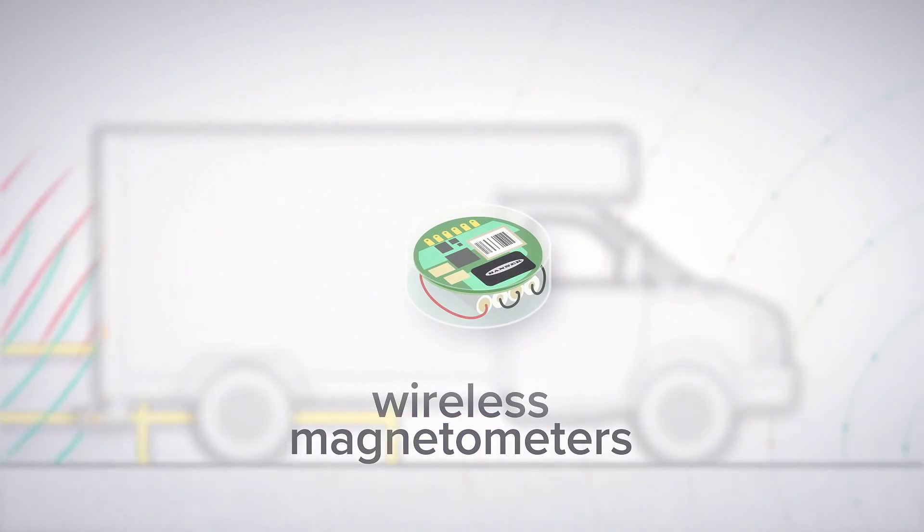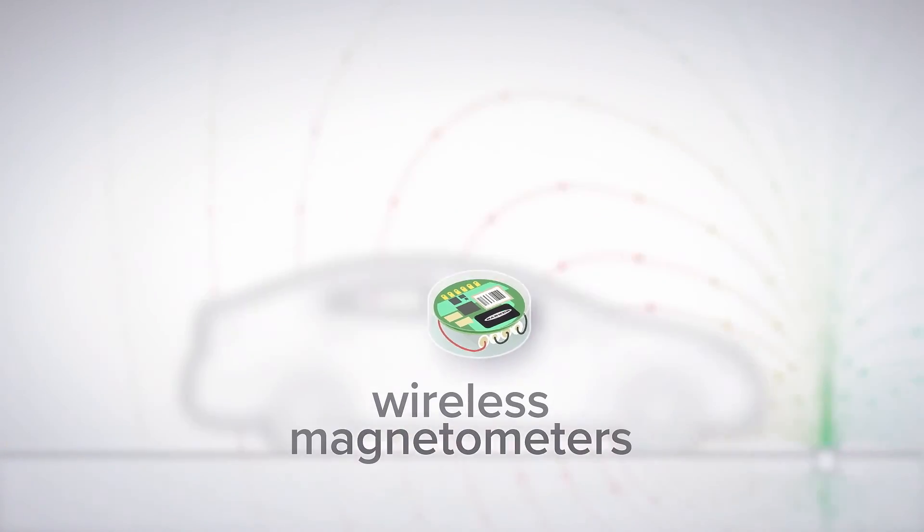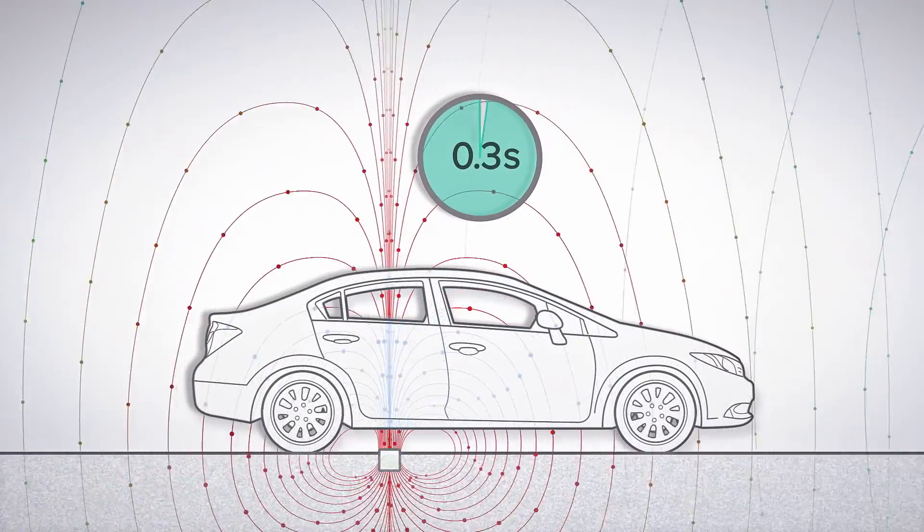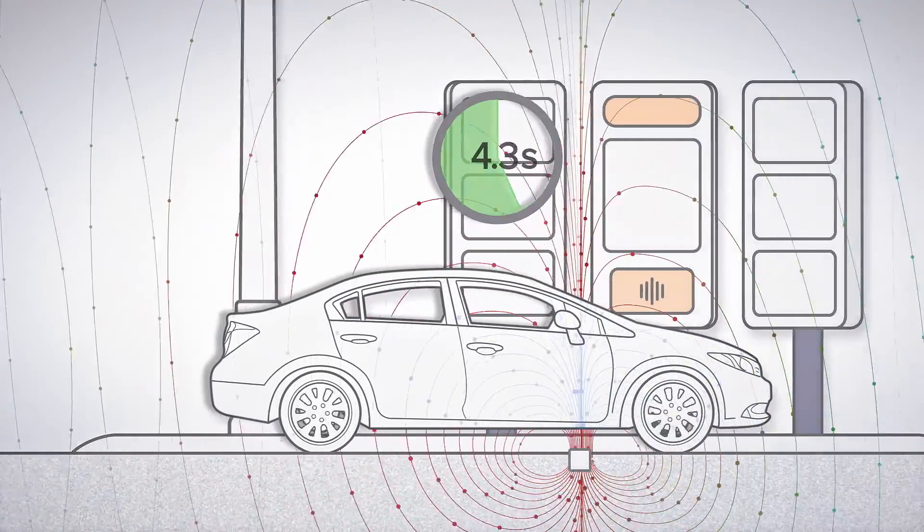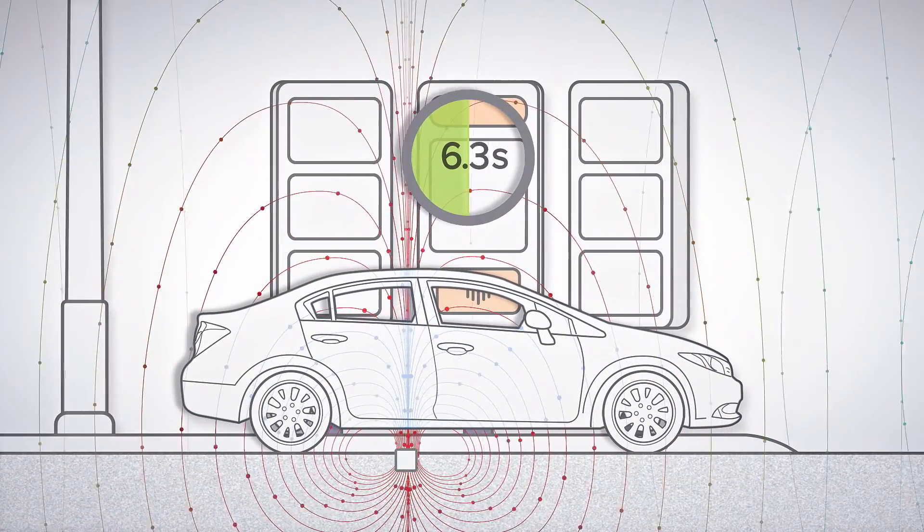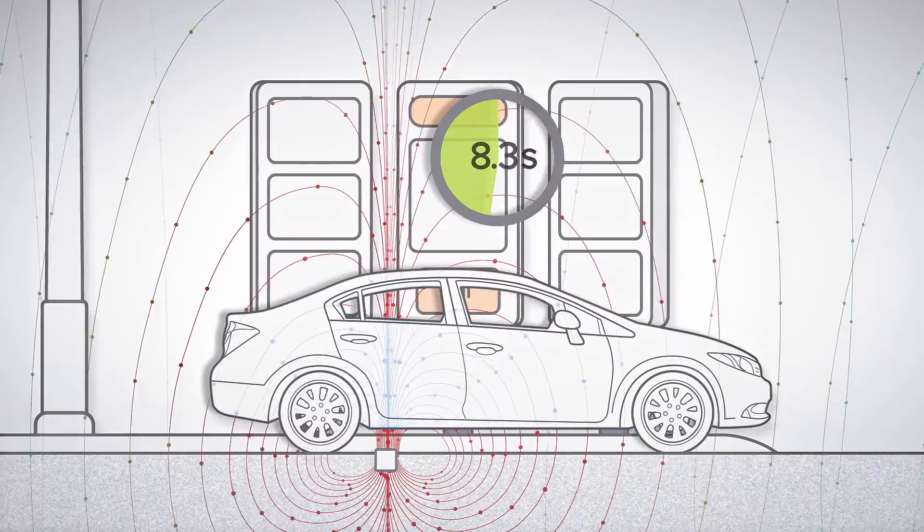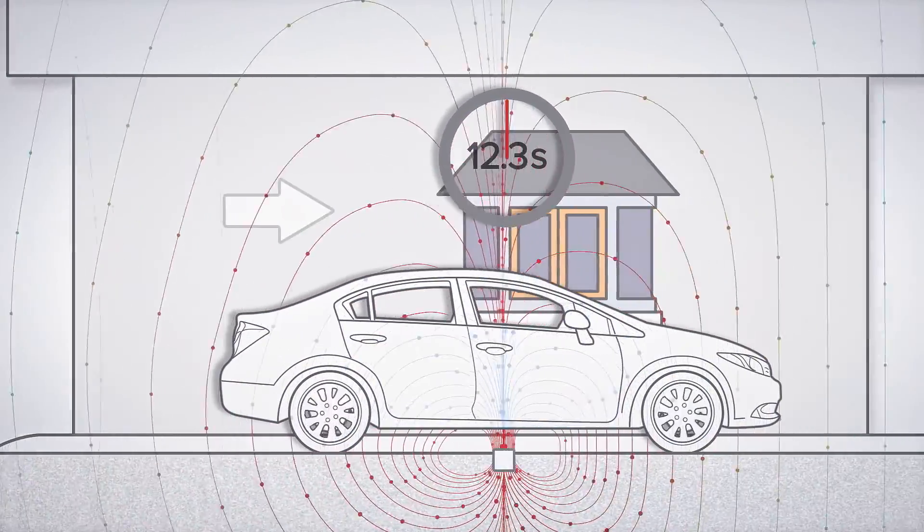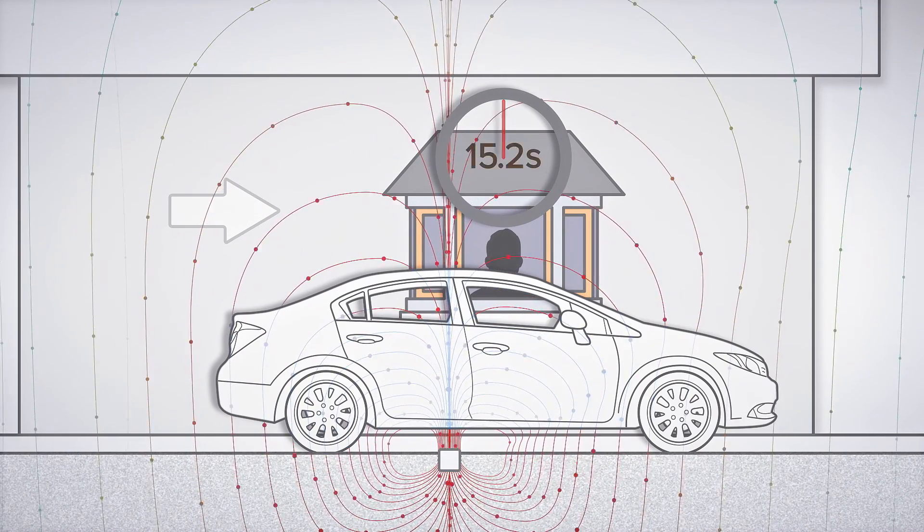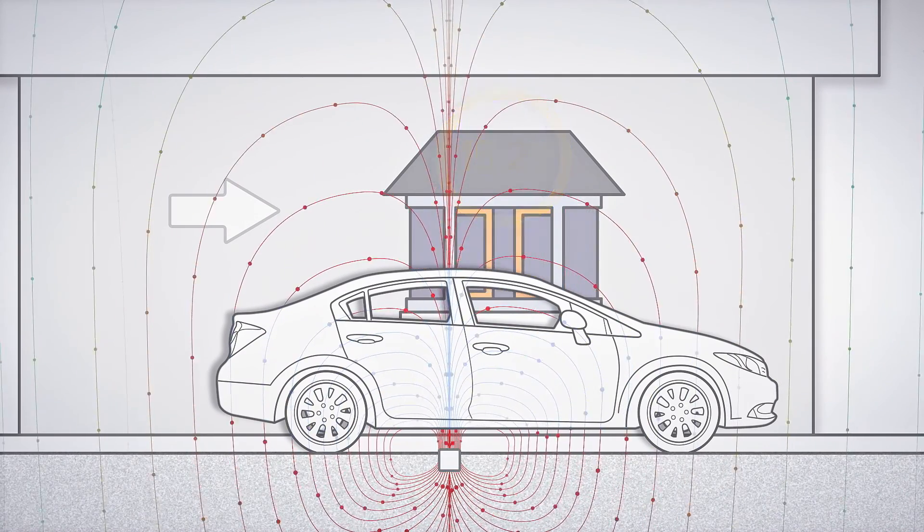Where wires are impractical, wireless magnetometers are a popular choice. They're perfect for outdoor applications with extreme weather demands. In this example, they're installed at various points of a drive-thru to track customer throughput time. These self-contained devices detect vehicles by measuring changes in the ambient magnetic field around them. Installation is quick and easy, requiring only a small hole drilled in the ground.